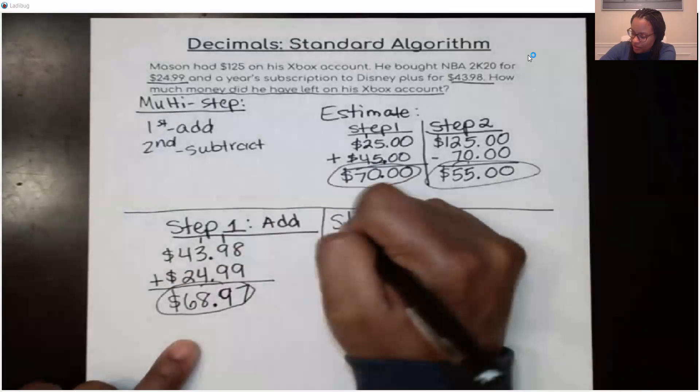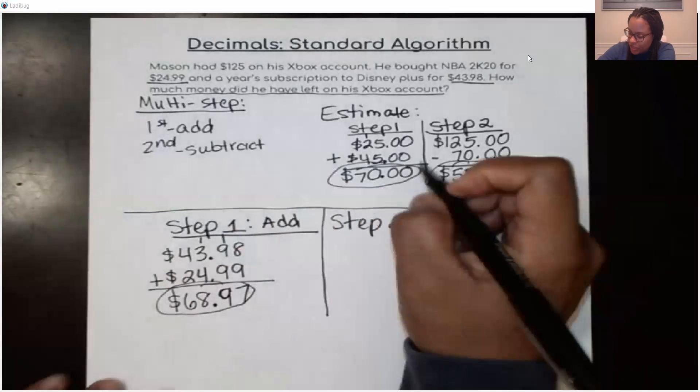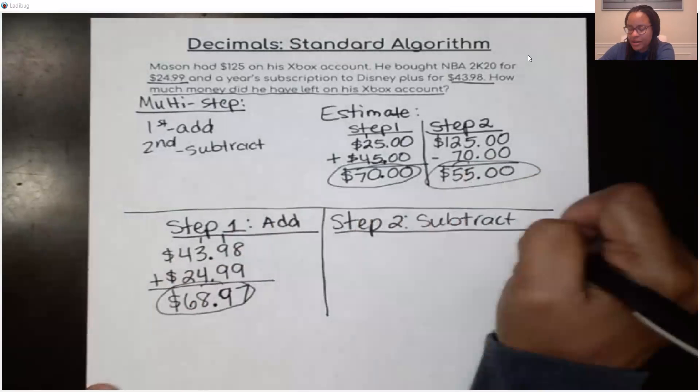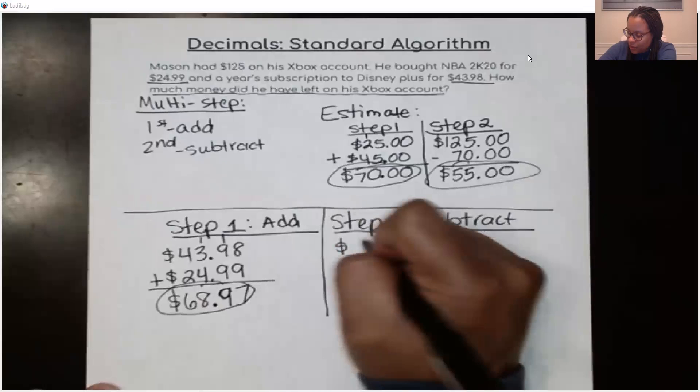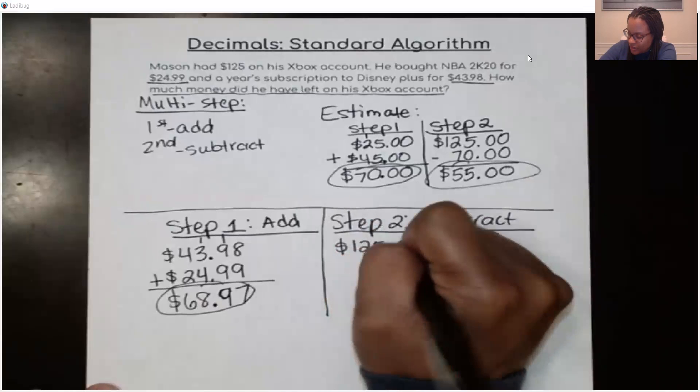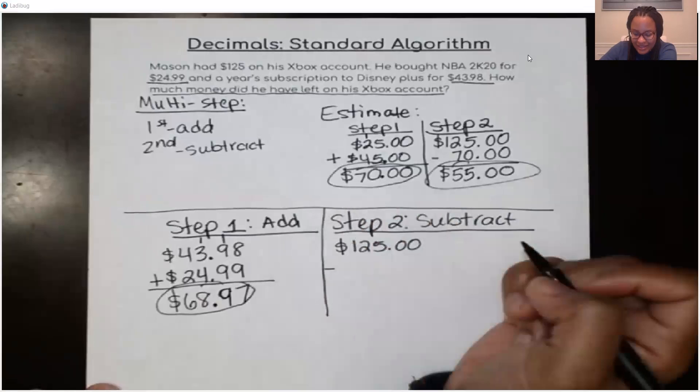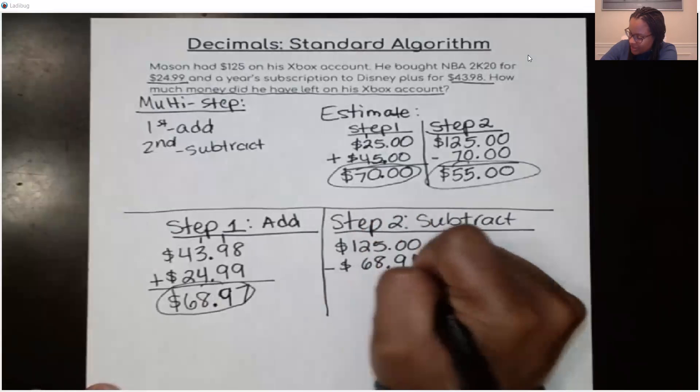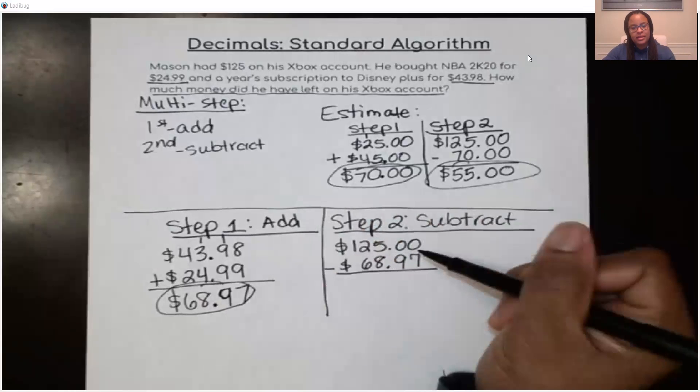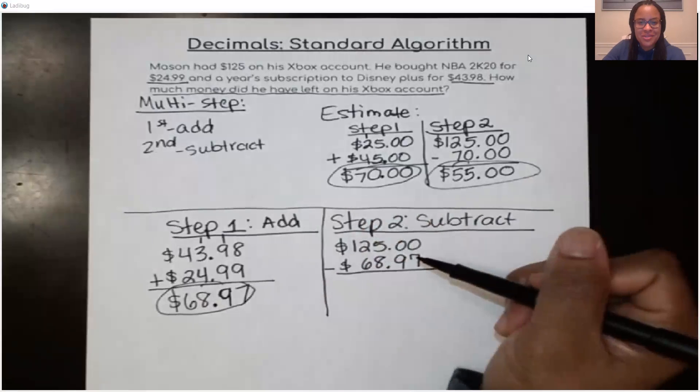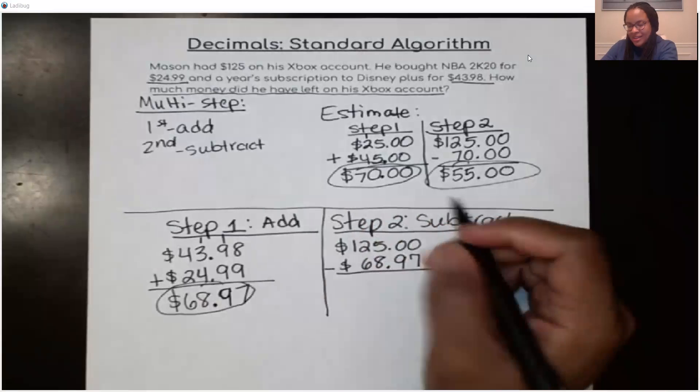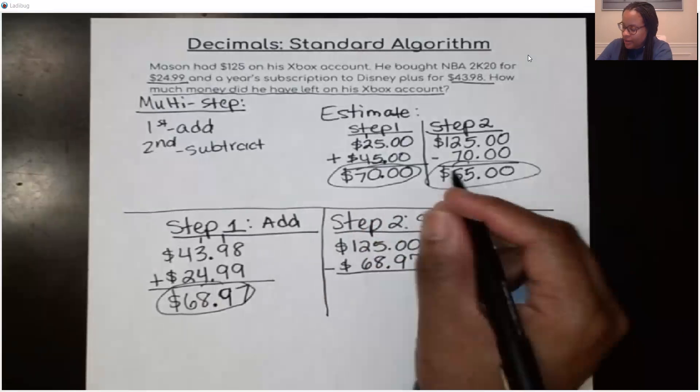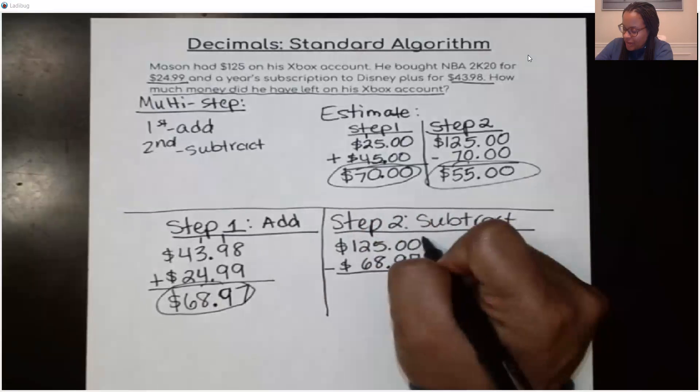Now I'm going to do step 2. Which is to subtract this amount from the total amount of money that he has on his account. So I'm going to go $125 minus $68.97. And again, lining up all of my place values in the right order. Now, I get to subtract using zeros. All right. Here we go. This is where it gets a little tricky. But I'm going to have to borrow.